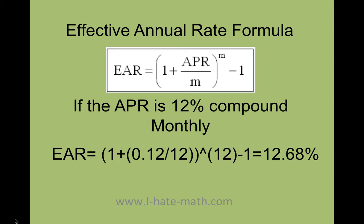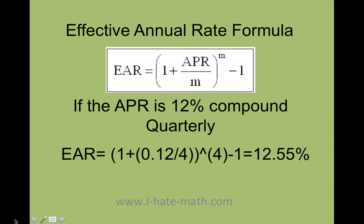What about if your effective rate was quarterly? The same procedure, but your m, as you can see, is just 4. So once you do the math, you're going to get 12.55.